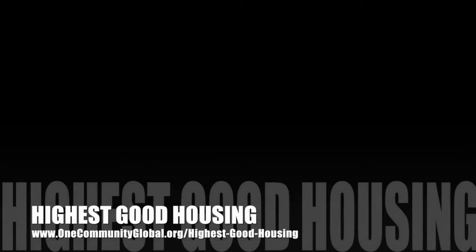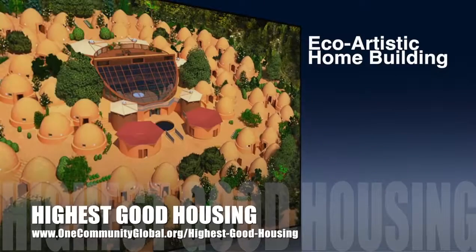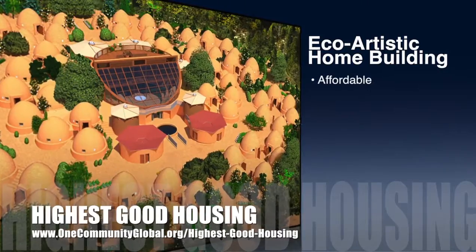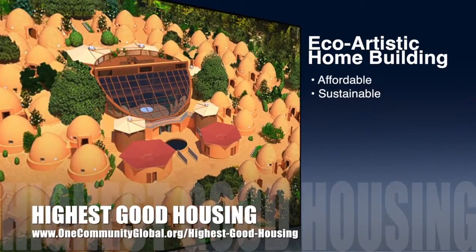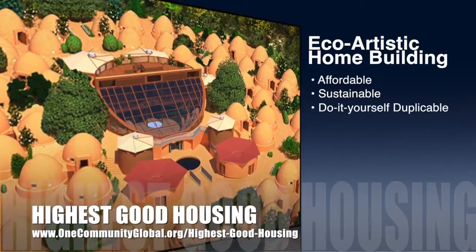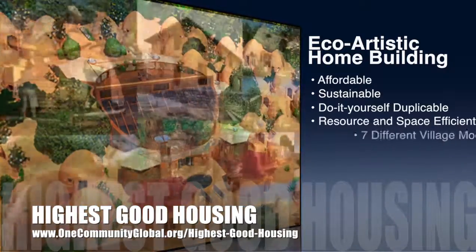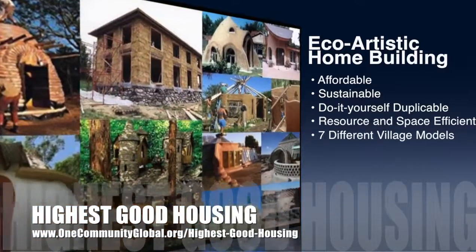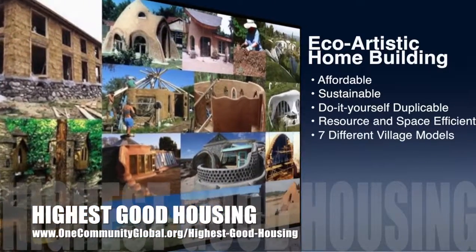One Community's approach to highest good housing is eco-artistic home building that is affordable, sustainable, do-it-yourself, duplicable, resource- and space-efficient, and consists of seven different sustainably constructed village models.